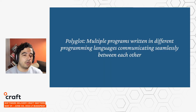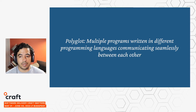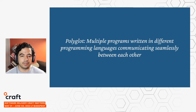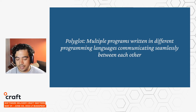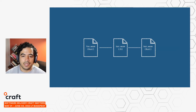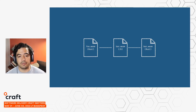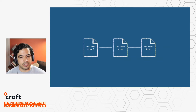Now onto the definition of polyglot. For the context of this presentation, I'm defining polyglot as multiple programs written in different programming languages communicating seamlessly between each other. What I mean by this definition — this is not something attributed to myself, it's a mental model I developed. It's best represented in a diagram: multiple WebAssembly programs potentially compiled by different toolchains — for example, foo.wasm compiled by Rust, bar.wasm compiled by JavaScript with something like Javi, and bas.wasm compiled again by Rust — all communicating seamlessly between each other.